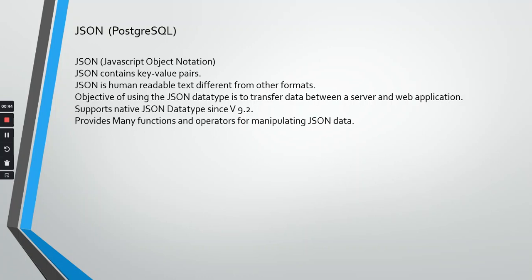PostgreSQL supports native JSON data type since version 9.2. This is very important — PostgreSQL server actually supports JSON data type. Currently, even Microsoft SQL Server does not support a JSON data type. It has operators to work with a JSON string, but it does not support a JSON data type natively.